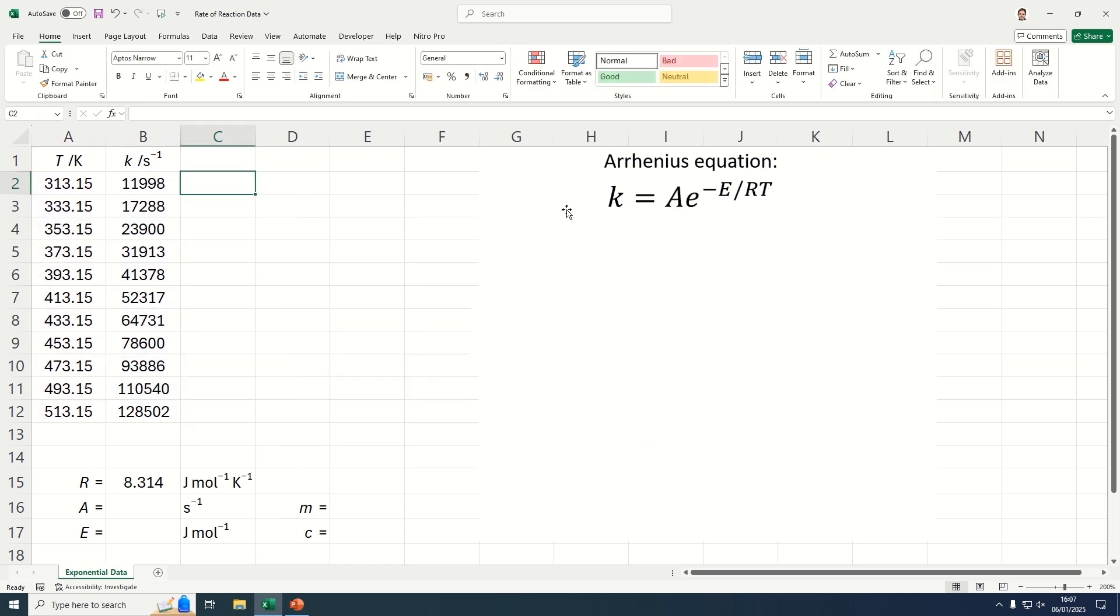So the equation that we're going to use to fit this data is the Arrhenius equation. So k equals A, a pre-exponential factor or the collision constant, times e to the power of capital E, activation energy, divided by RT, that is the gas constant and then the absolute temperature in Kelvin.